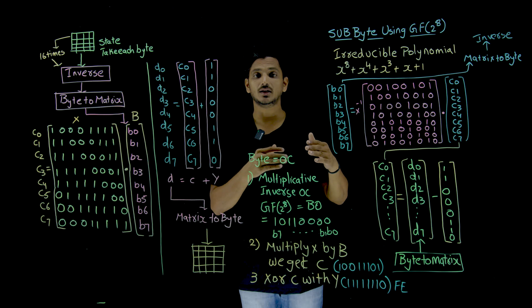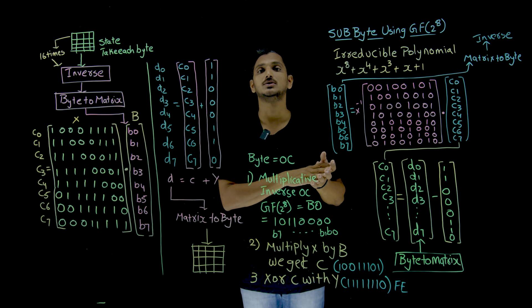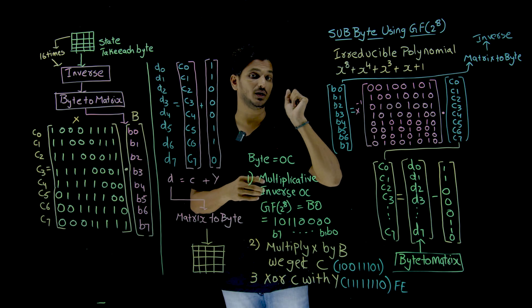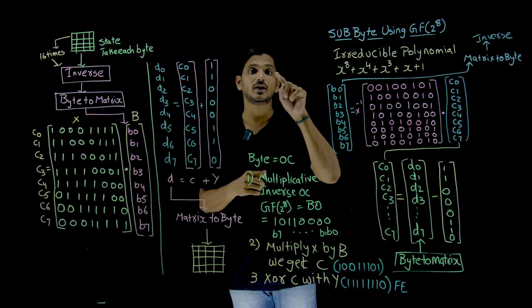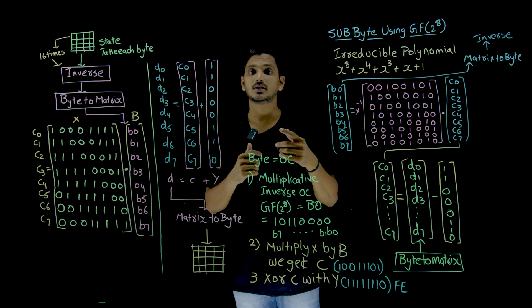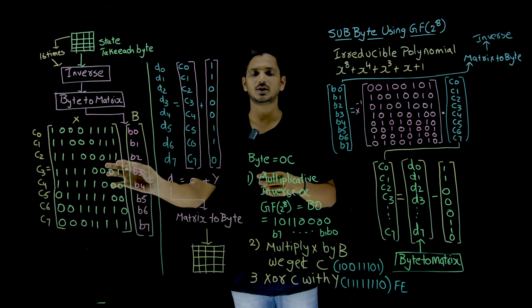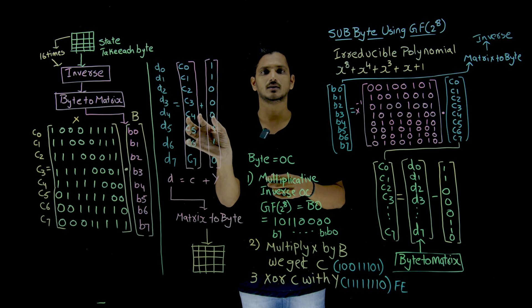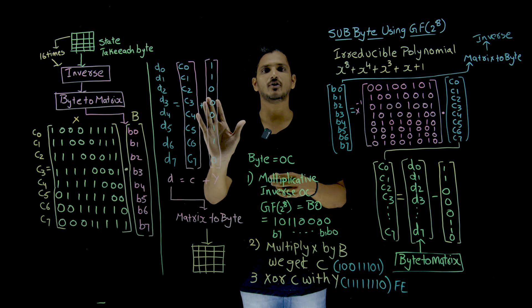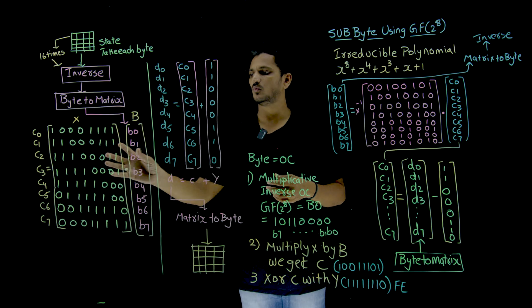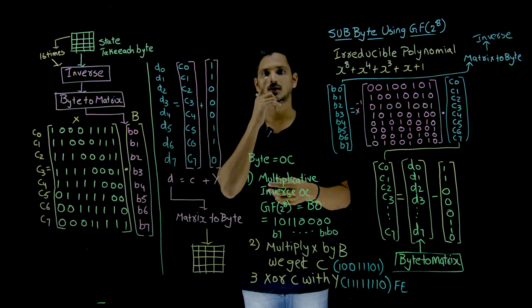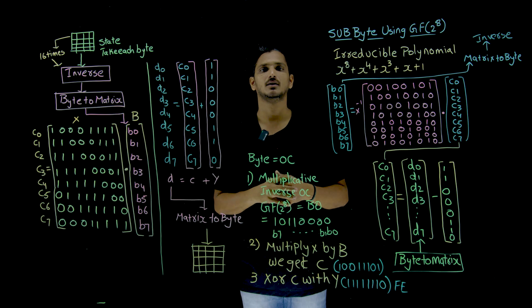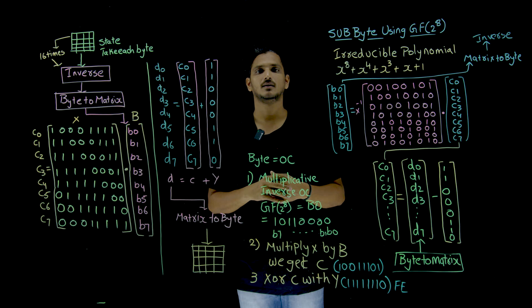During the decryption, we are doing exactly the opposite. Remember in our beginning classes we clearly discussed about affine ciphers. Affine ciphers means first do the multiplication, then addition. This is the same as affine ciphers, but here we are using matrix multiplication and matrix addition.